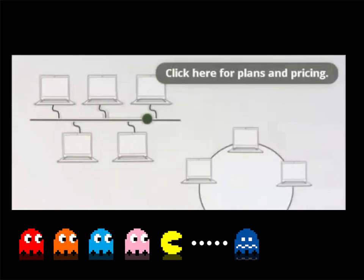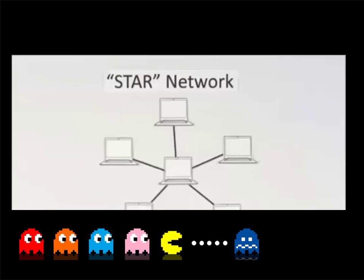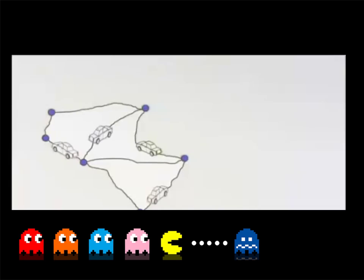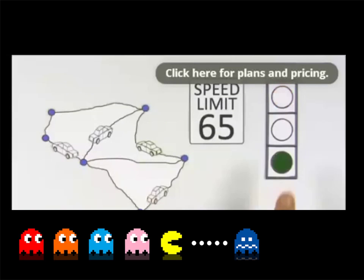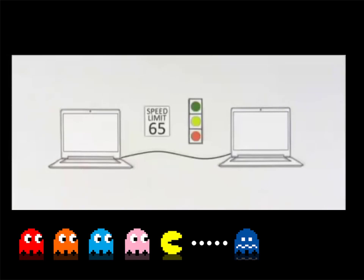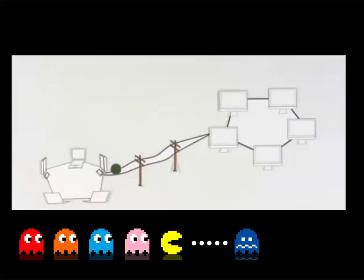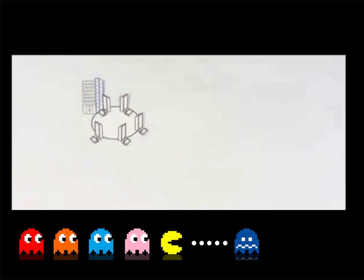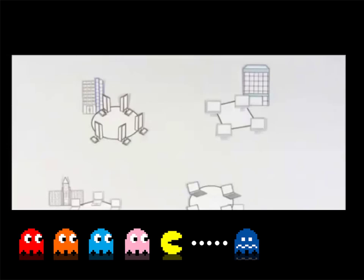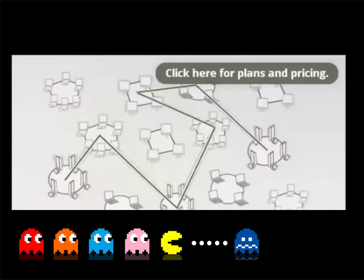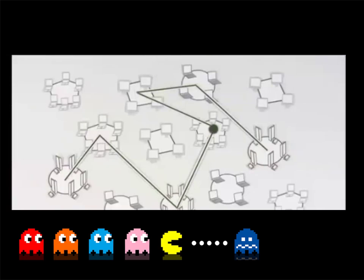Some computers on the network may connect to a single cable; others connect to each other to share information. But the most common network these days uses a single resource as the hub for all the connections. For these nodes and connections to work they need rules — called protocols — which help computers talk to each other and allow networks to connect to other networks, even over phone or cable lines that cover huge areas. Multiple business or university networks can connect and communicate, and extending this idea further, the network becomes the internet.